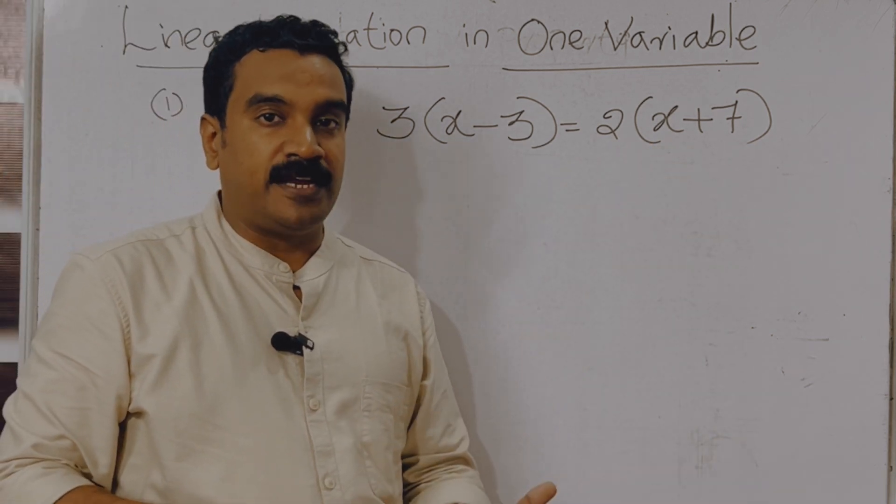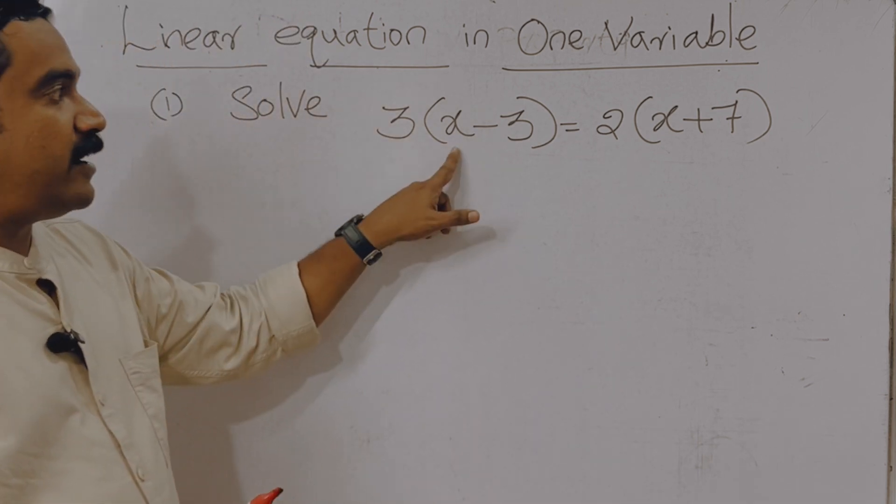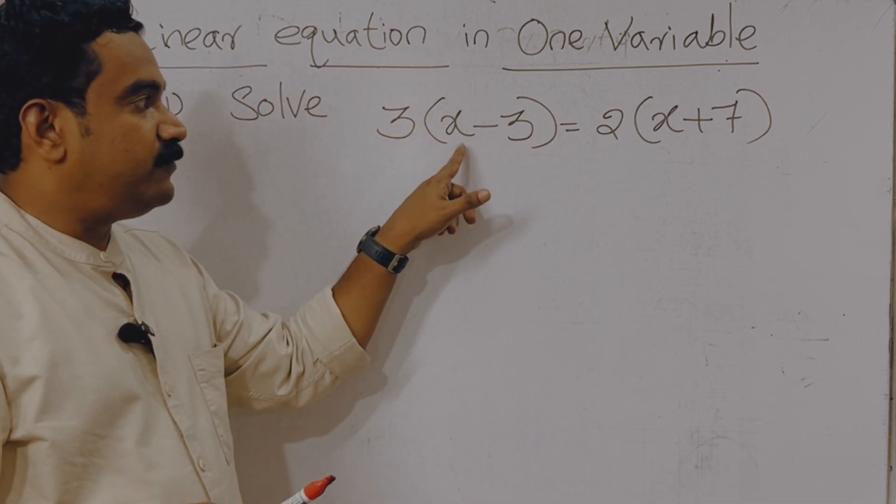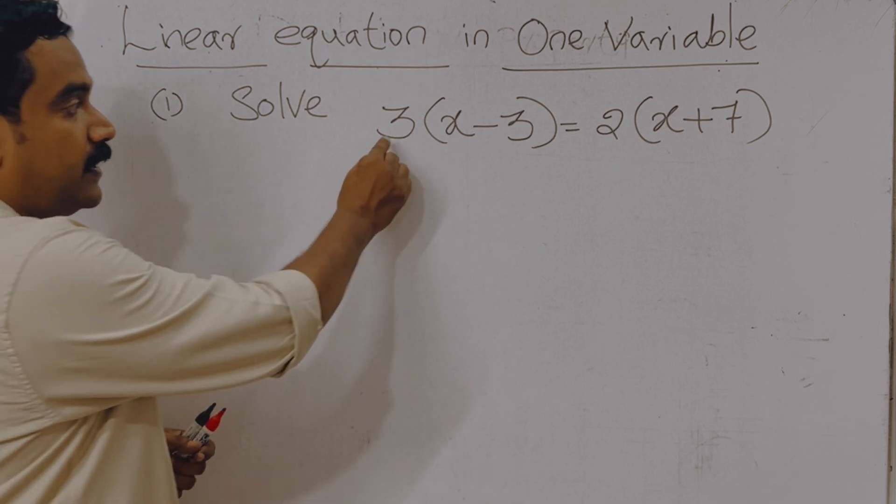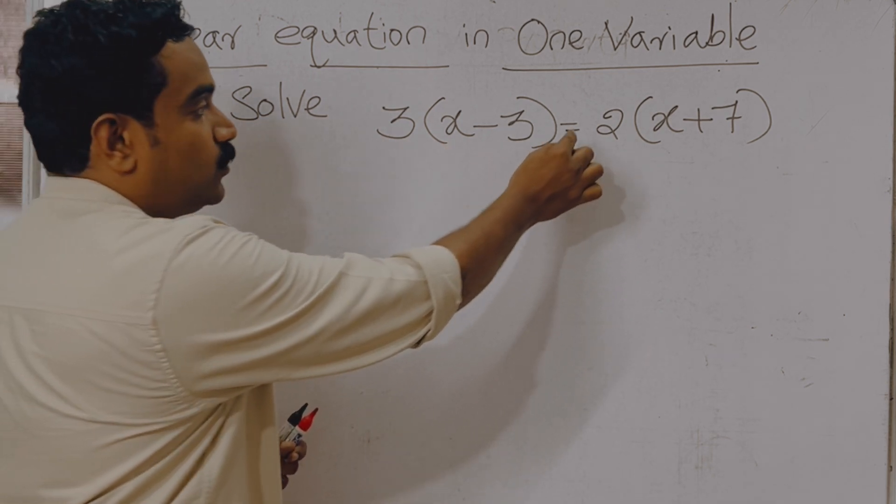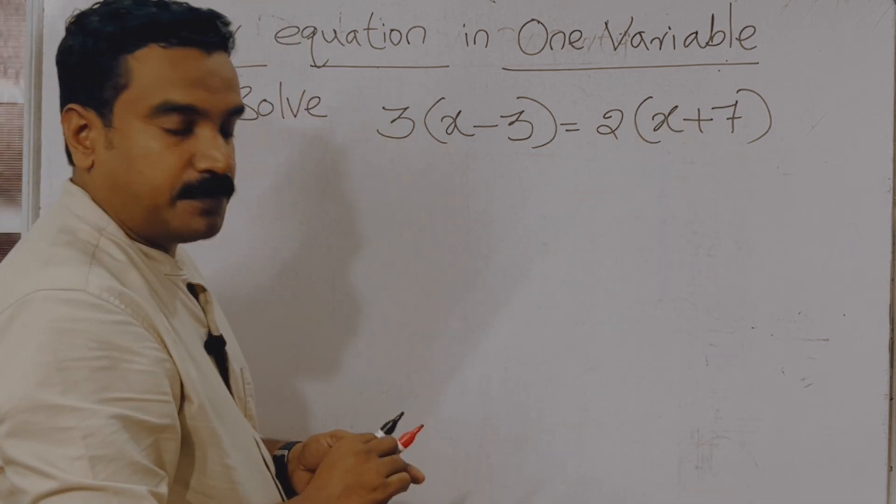Solve means we need to find the unknown, the unknown is the value of x. So solve means we need to find the value of x. The question is 3 into x minus 3 equal to 2 into x plus 7.